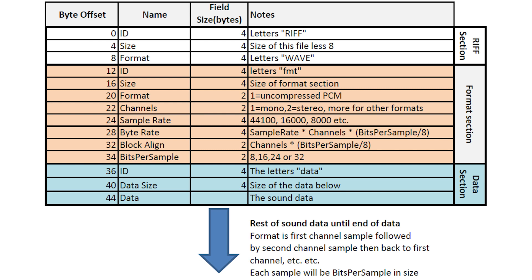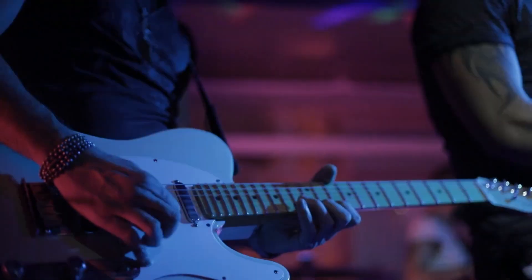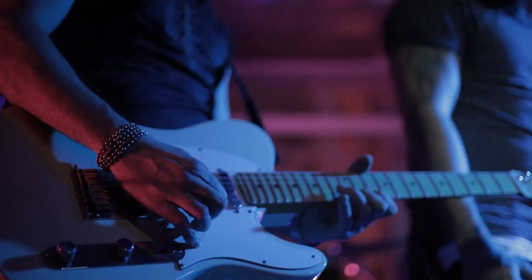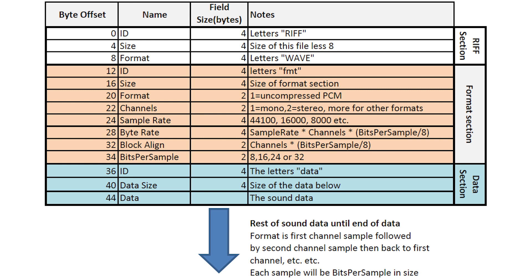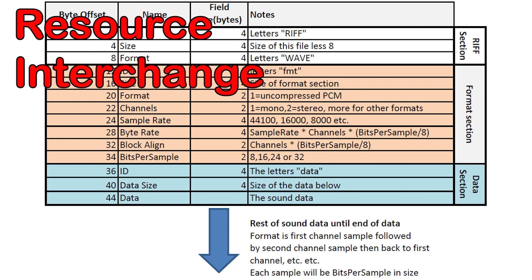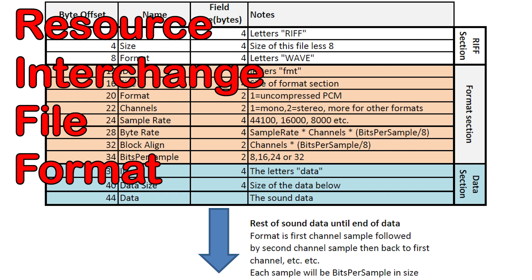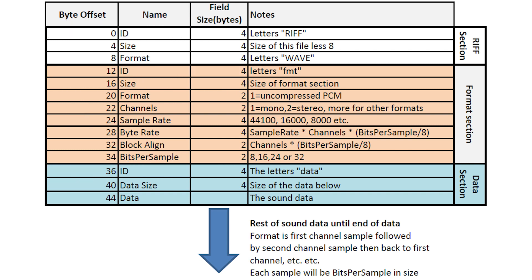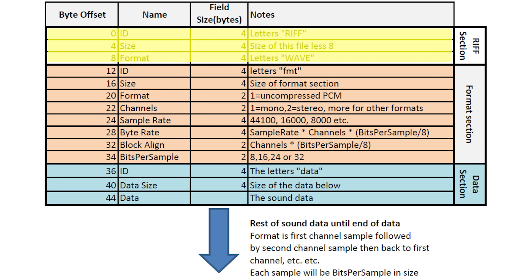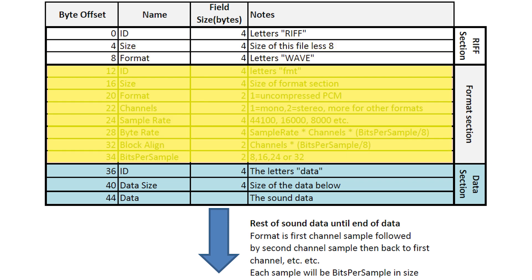Here's the start of what is termed the header part of the file. A WAV file's structure follows a format called RIFF. RIFF stands for Resource Interchange File Format and is a generic file container format for storing data in what's termed tagged chunks. It's primarily used to store multimedia such as sound and video, although it may also be used to store any arbitrary data. It's divided into three sections: the RIFF, the format, and the data sections.